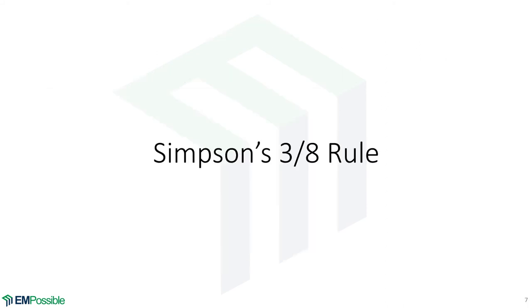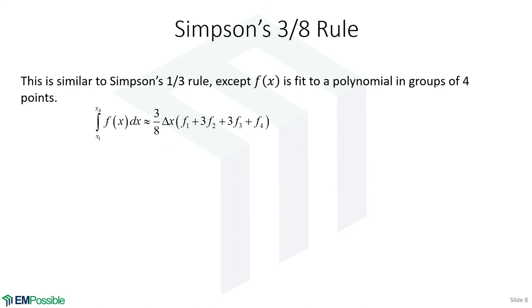Simpson's three-eighths rule. This is very much like the one-third rule, except we're looking at groups of four points instead of three points. And so, this is Simpson's three-eighths rule, derived the same way. We fit to a cubic polynomial, and we integrate from minus delta x to positive delta x. We simplify, and we end up here. And there's a three-eighths sitting out here, thus it's called Simpson's three-eighths rule. So, we do this in groups of four points from A to B, and that's how we do numerical integration with Simpson's rules.